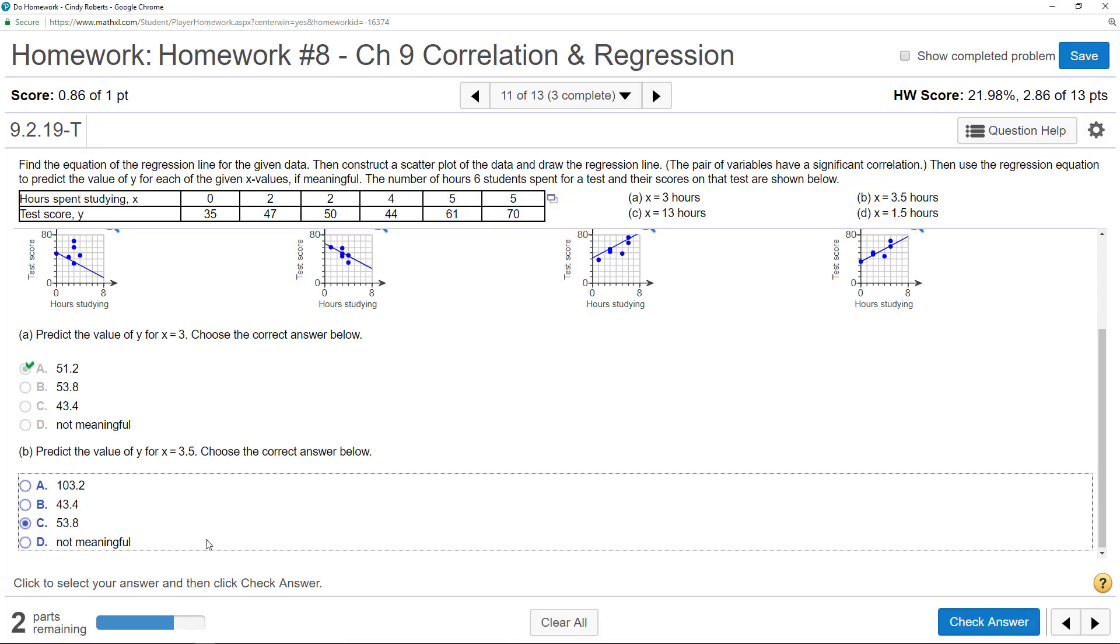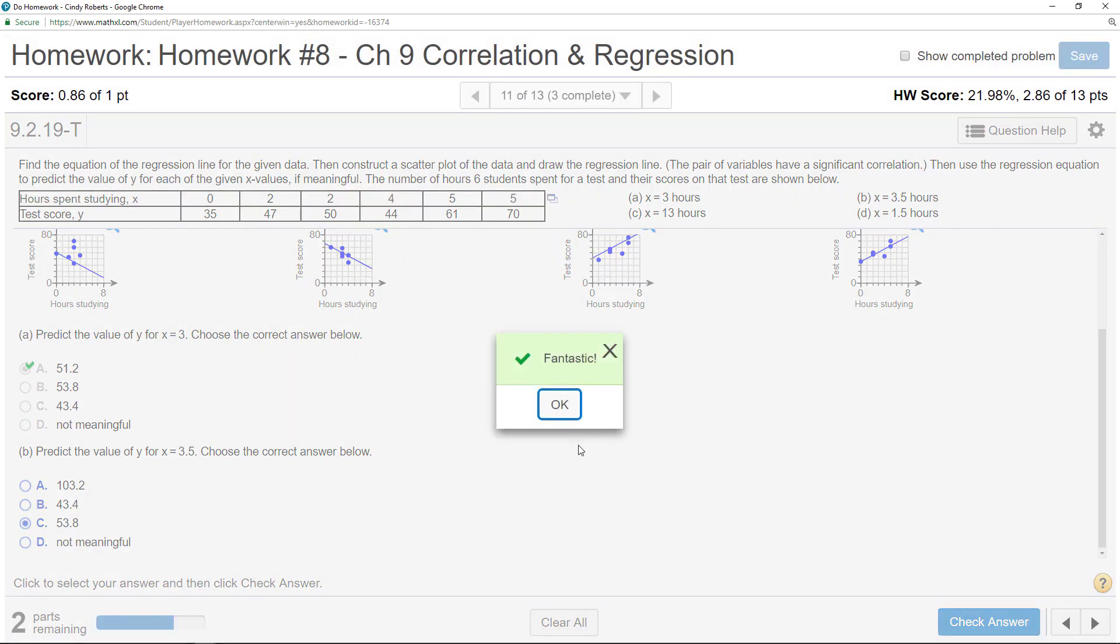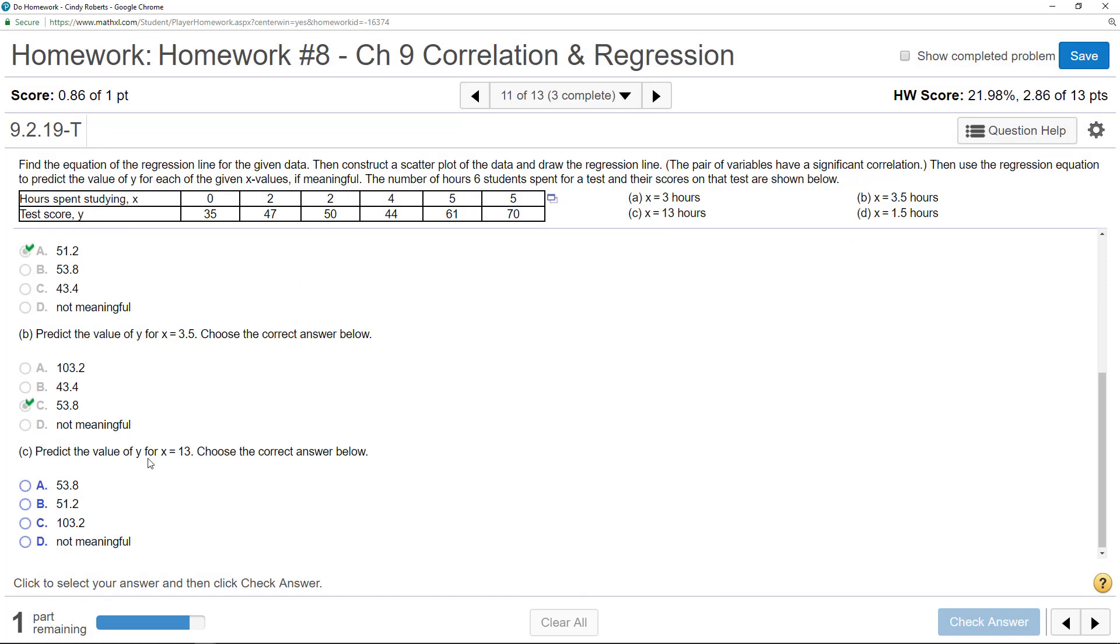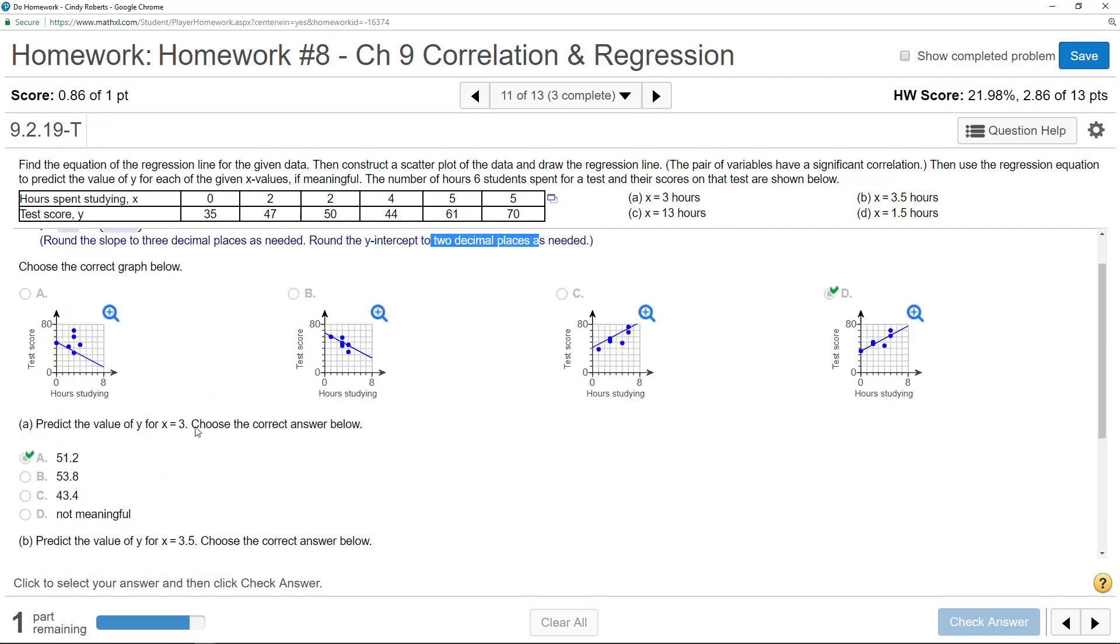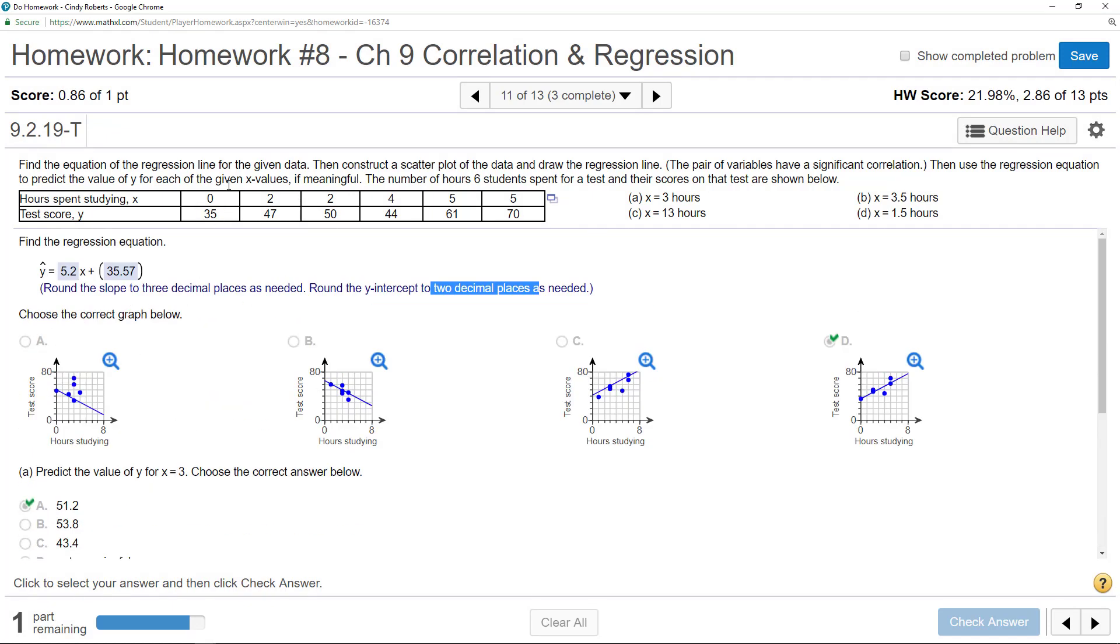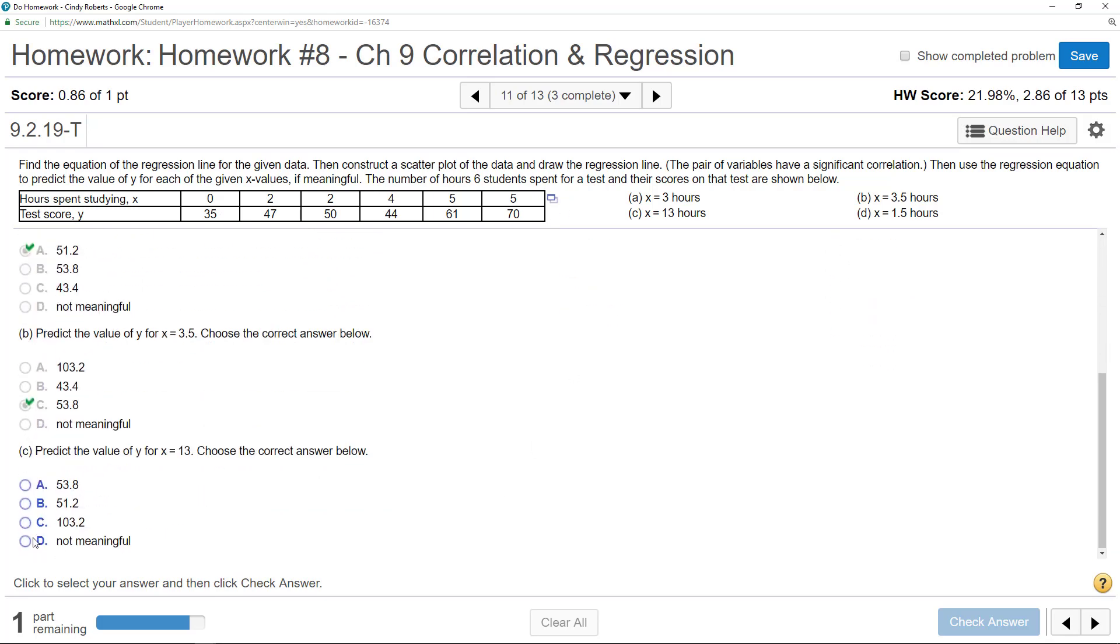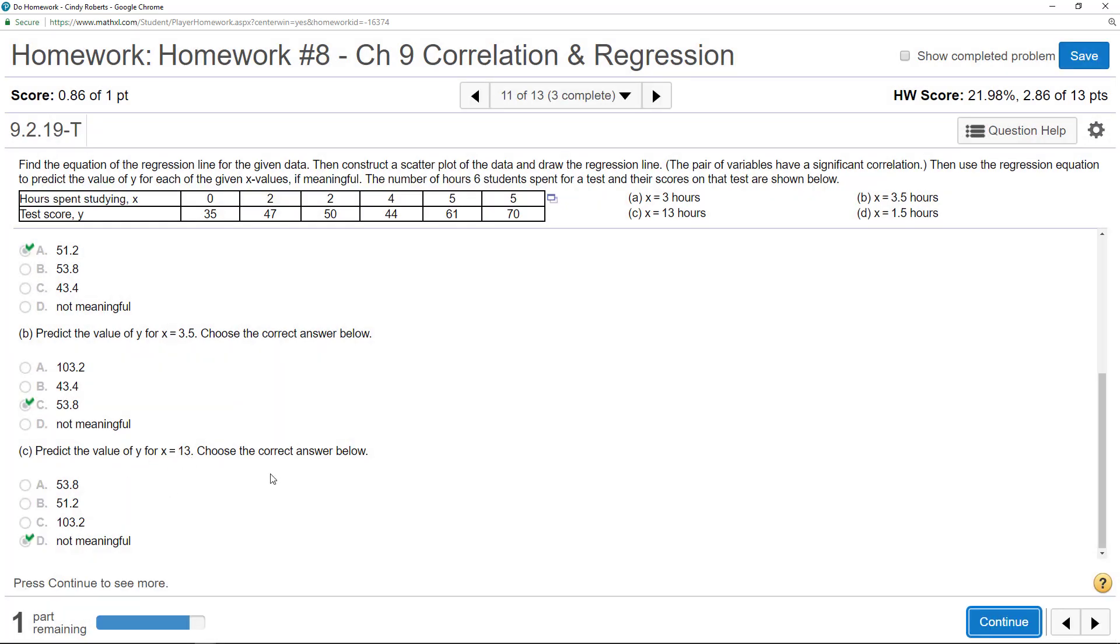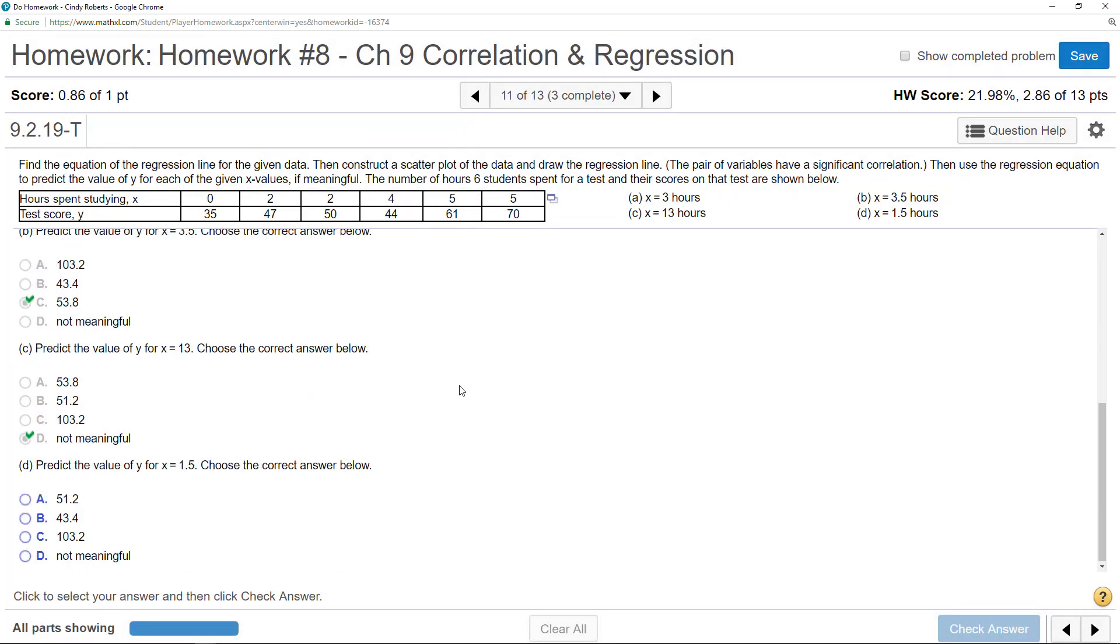The next one here, you might be wanting to plug 13 into your equation, but notice our data here doesn't go out that far. So I don't think that would have very good meaning. If we wanted to predict something that far out, we probably should go get some more data that's closer to that value. So that's all that means—it's not meaningful.